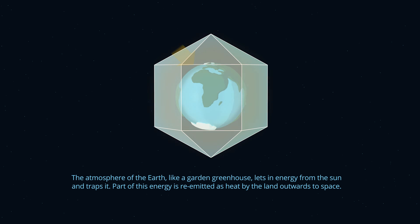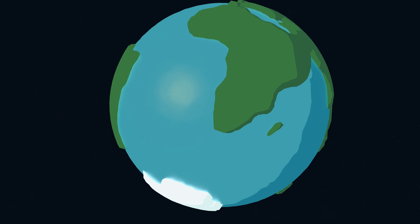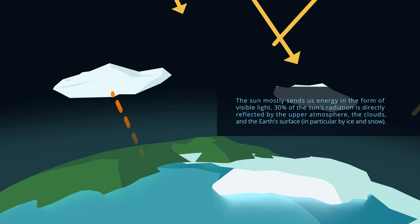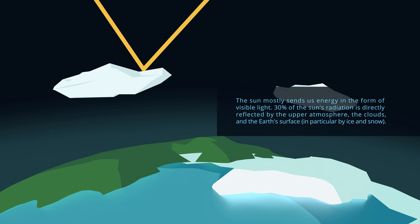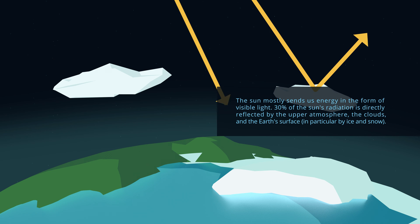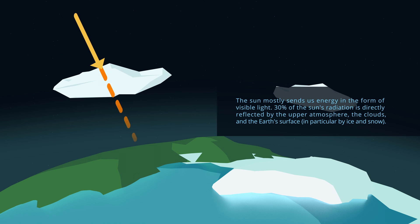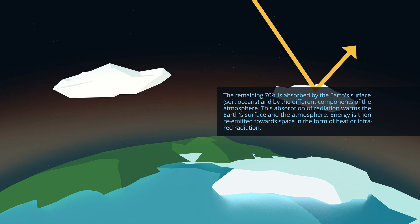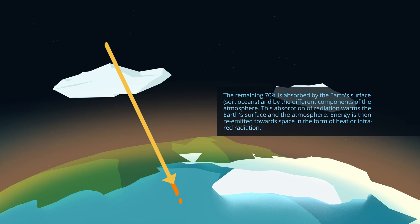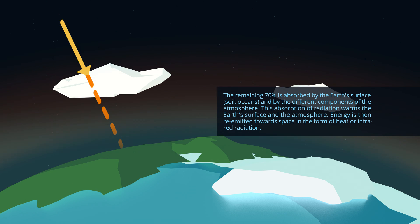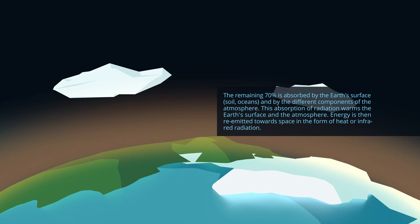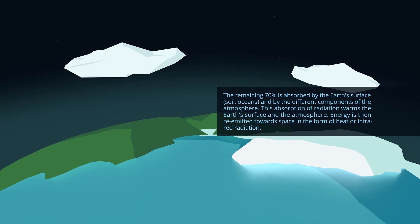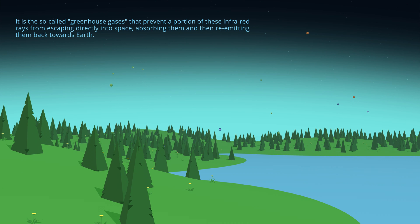Part of this energy is re-emitted as heat by the land and outwards to space. The Sun mostly sends us energy in the form of visible light. 30% of the Sun's radiation is directly reflected by the upper atmosphere, the clouds and the Earth's surface, in particular by ice and snow. The remaining 70% is absorbed by the Earth's surface, soil, oceans, and by the different components of the atmosphere. This absorption of radiation warms the Earth's surface and the atmosphere. Energy is then re-emitted towards space in the form of heat or infrared radiation. It is the so-called greenhouse gases that prevent a portion of these infrared rays from escaping directly into space, absorbing them and then re-emitting them back towards Earth.